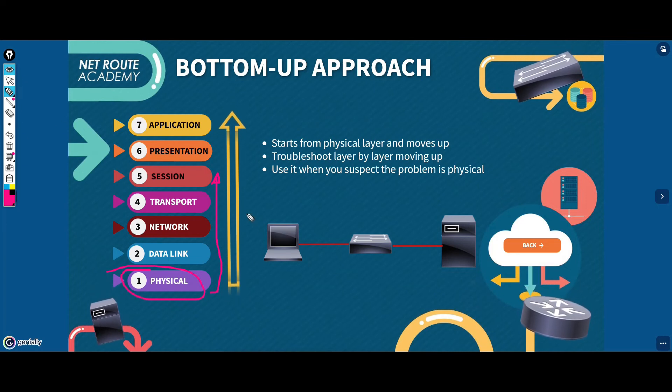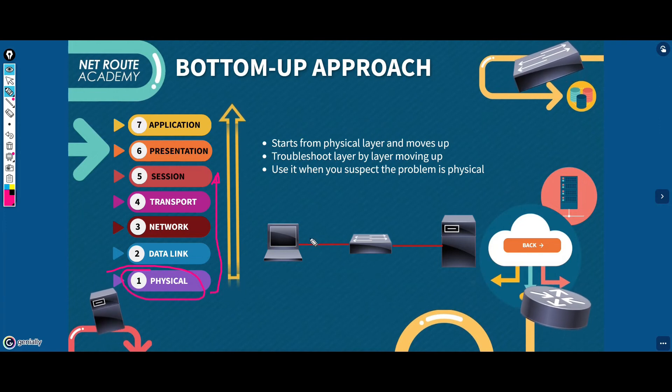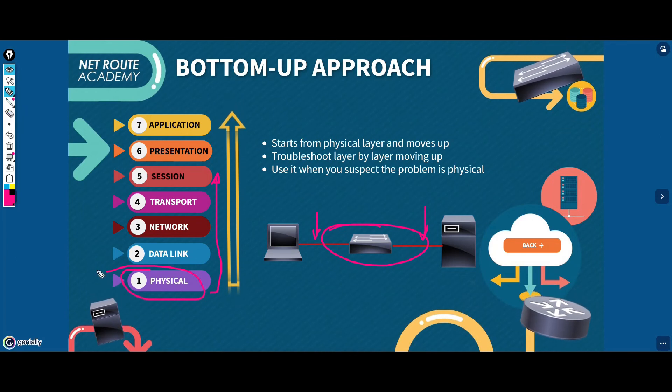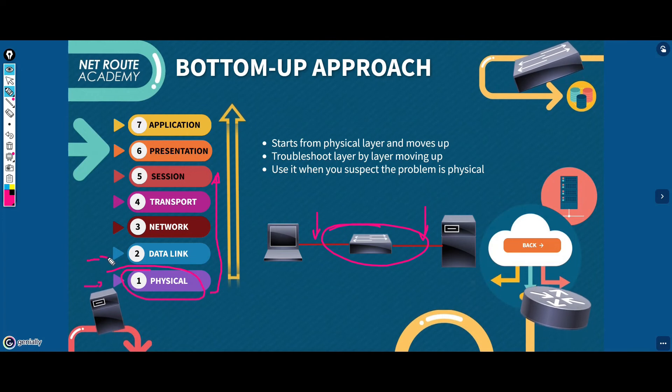This method is effective if the problem is located in the network infrastructure because most networking problems occur in the lower layers of the protocol stack. The troubleshooting bottom-up approach starts with the physical components of the network and works through the layers of the OSI model.